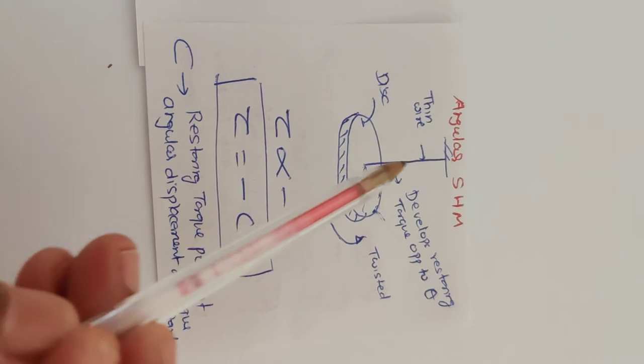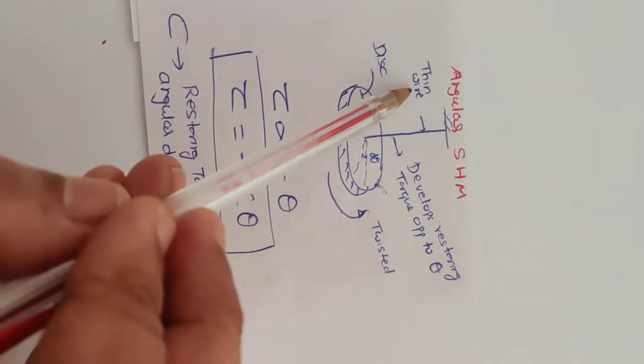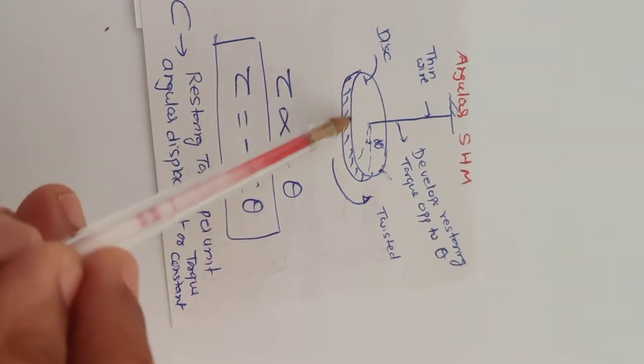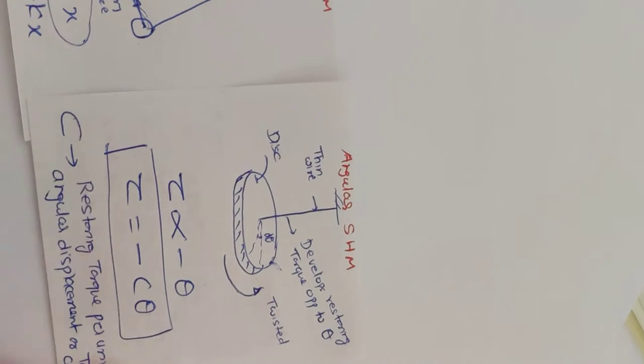Now imagine this disc which is being suspended by a thin wire. Like we take it here, force it here, take it here on the side. Suppose I apply a torque in the anti-clockwise direction. So what does this do?